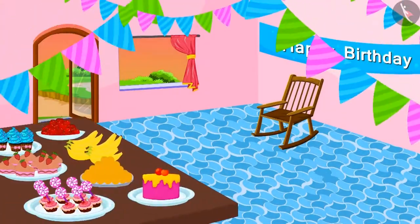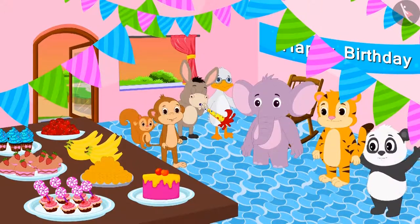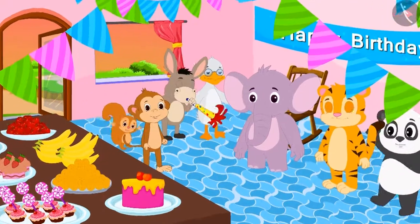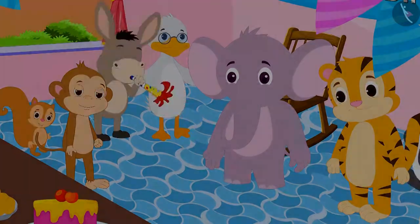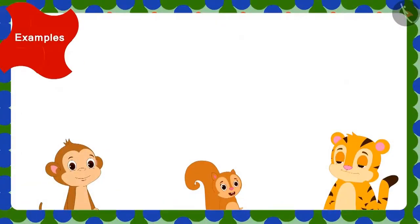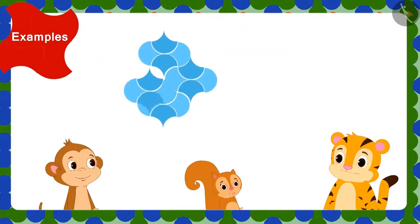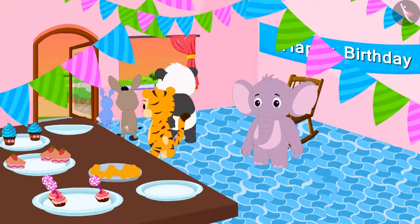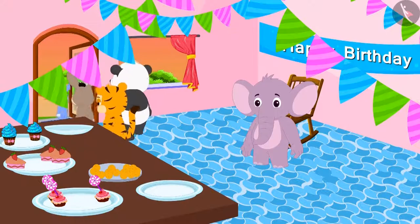Sher Khan, Chanda, and Babban have come to Appu's birthday party. On seeing the design made with tiles on Appu's floor, they also thought of using such tiles to make beautiful designs in their house. The party got over and everyone went back home.